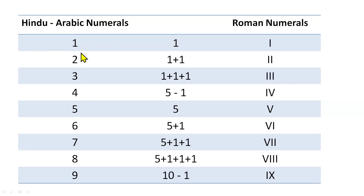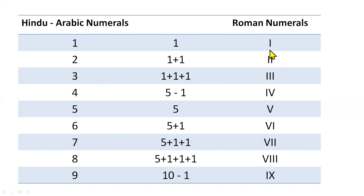Now we have Hindu-Arabic numerals and Roman numerals. I will explain how to write numbers 1 through 9. 1 is I, 2 is II (1+1), 3 is III (1+1+1). For 4, we cannot write four I's because we can't repeat more than 3 times, so we take help from 5. Since 5 is V and 5−1 = 4, I is written on the left side: IV.